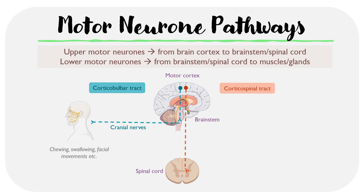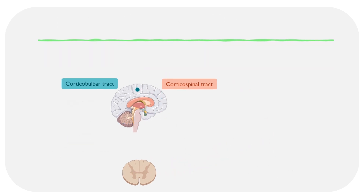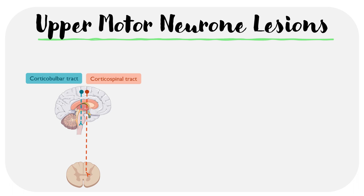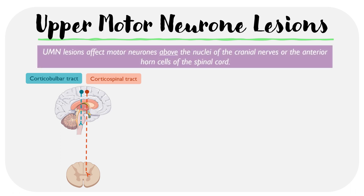The second group of lower motor neurons are termed the peripheral motor neurons, and these innervate skeletal muscle to allow movement of the trunk and limbs. Before we look at ALS in particular, we have to look at what happens individually in cases of upper motor neuron lesions and lower motor neuron lesions. An upper motor neuron lesion would affect motor neurons above the nuclei of the cranial nerves or above the anterior horn cells of the spinal cord.